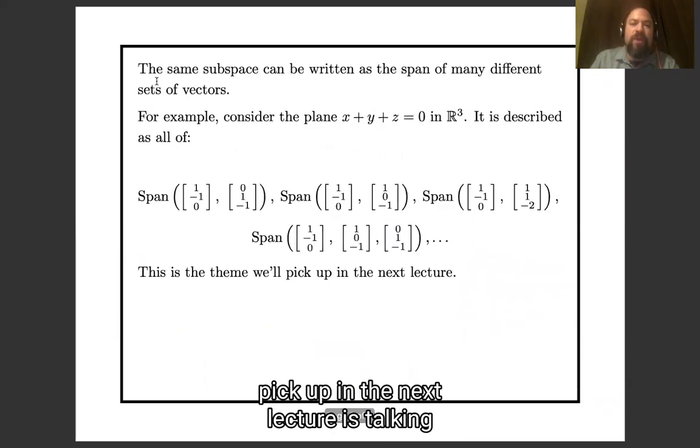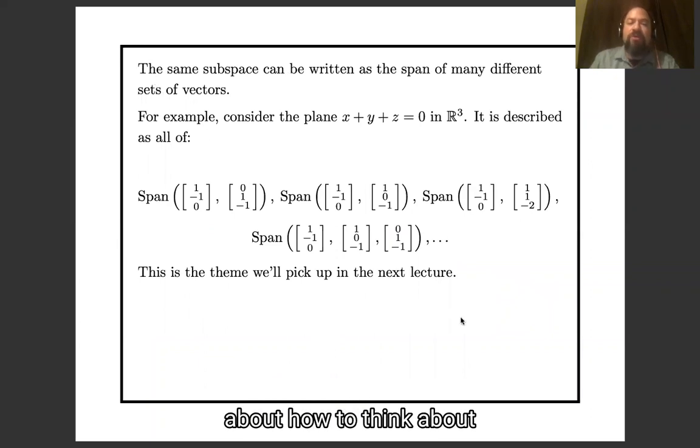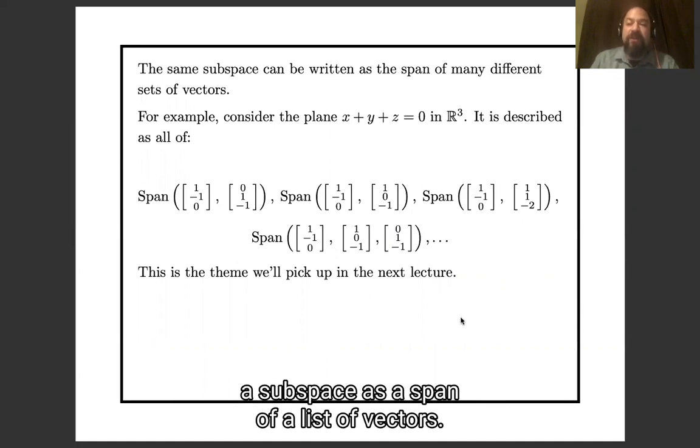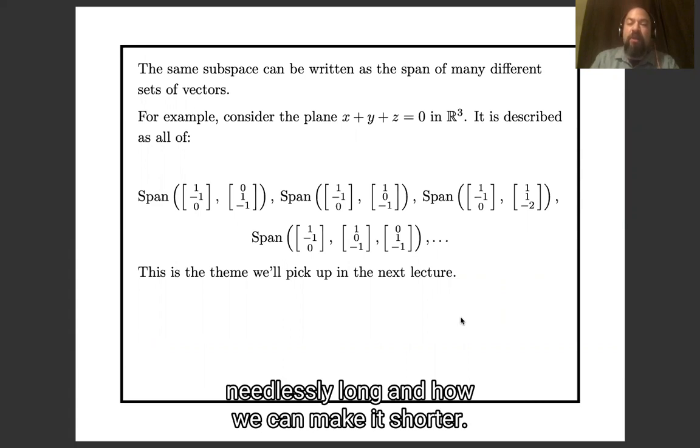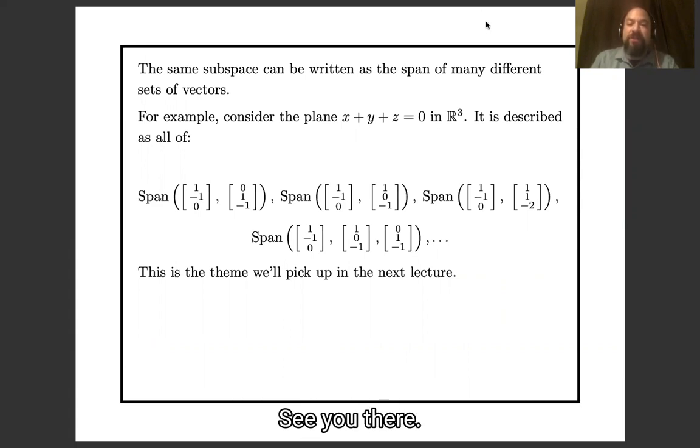Okay, so where we will pick up in the next lecture is talking about how to think about the different ways we could write a subspace as a span of a list of vectors. And in particular, how we could detect that a list of vectors was needlessly long and how we could make it shorter. See you there!